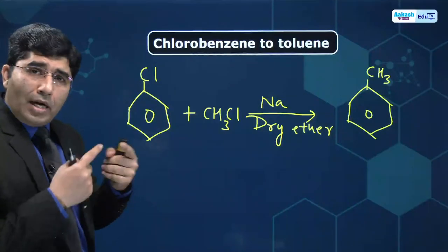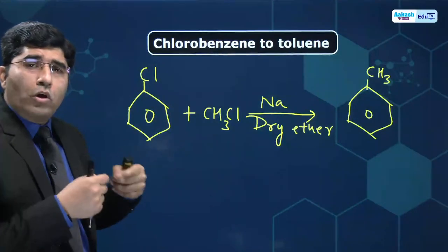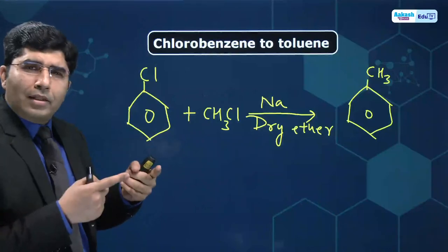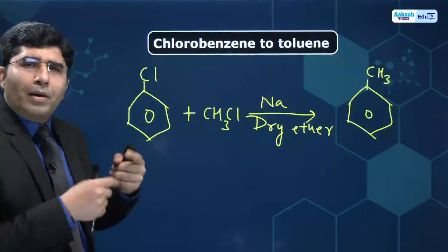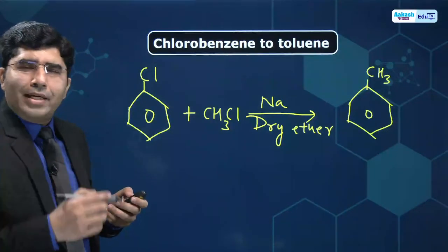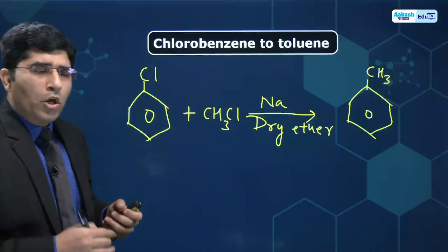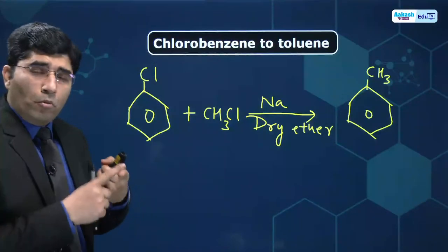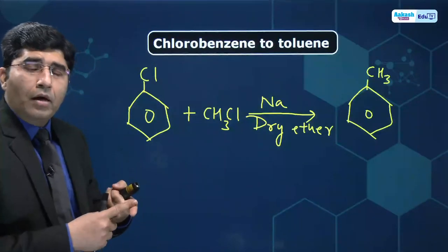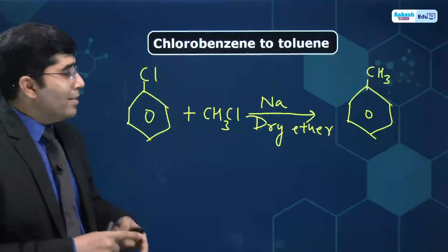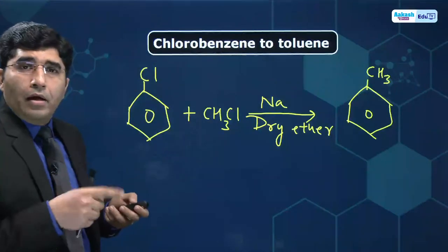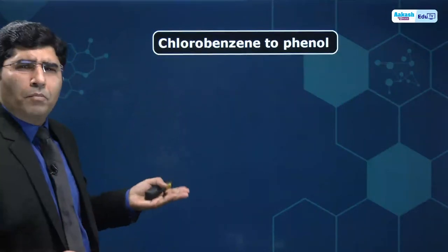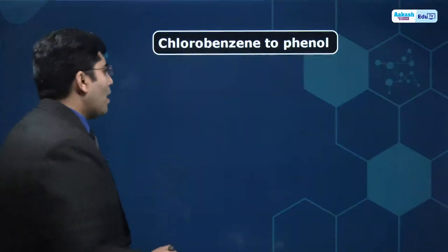Via the Wurtz-Fittig reaction, toluene can be made from chlorobenzene very easily. So what we are doing is we start from chlorobenzene and introduce another group. If this is known to you, then after that you can do chain reactions very easily. We have made benzene from chlorobenzene, bromobenzene from chlorobenzene, and toluene from chlorobenzene.